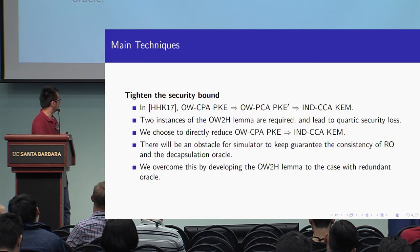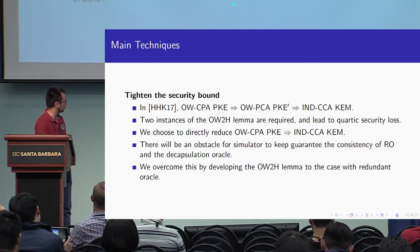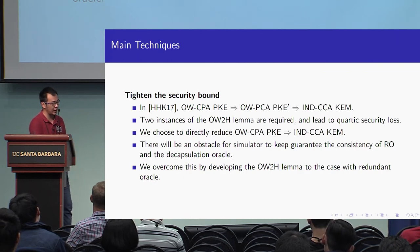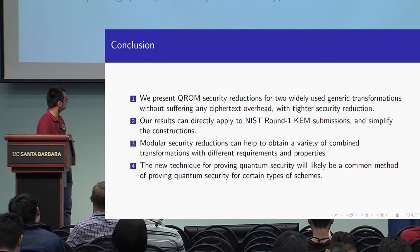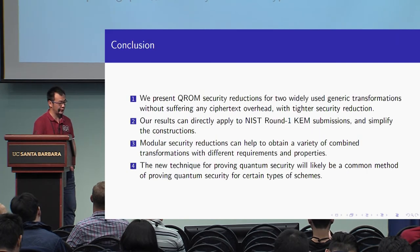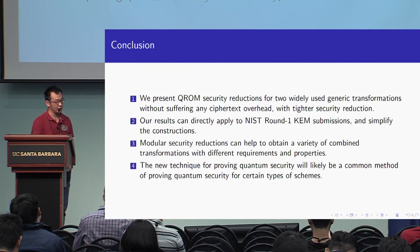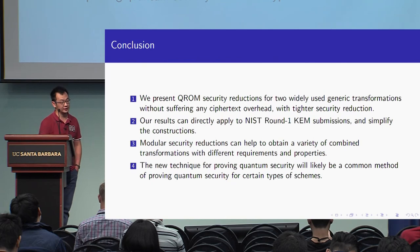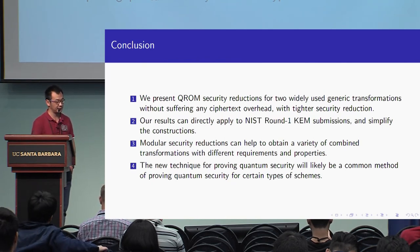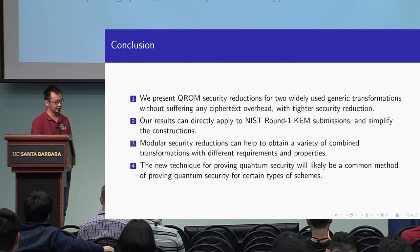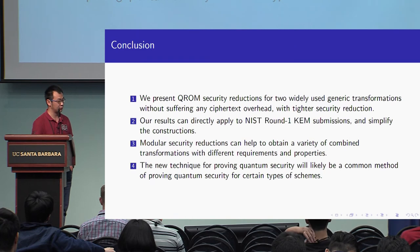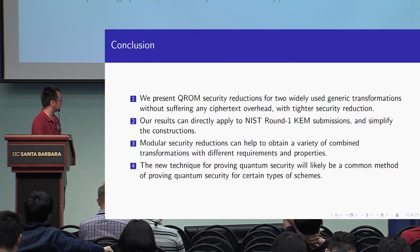In conclusion, we can prove quantum random oracle security, remove the additional hash, and obtain tighter security reductions. Our results have already been applied to round-one NIST submissions. Our modular security can be obtained by various combinations of transformations with different queries and properties, and we believe our paper provides new techniques that can inspire other schemes.